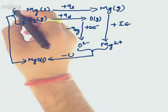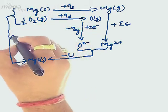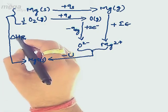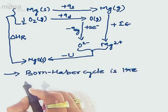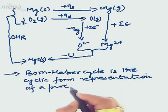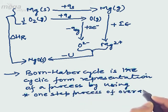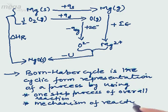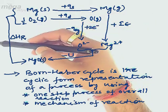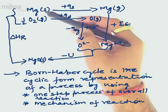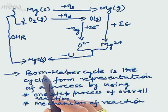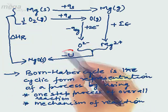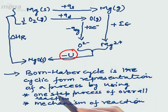When we represent the overall reaction in one step, there is an energy involved which we call ΔH_r — the heat energy or enthalpy of the overall reaction. So we can define the Born-Haber cycle as the cyclic form representation of a process using both the one-step overall reaction and the mechanism of the reaction. Using the Born-Haber cycle, we can determine the lattice energy, denoted as U. To do this, we need to discuss the law on which the Born-Haber cycle is based.